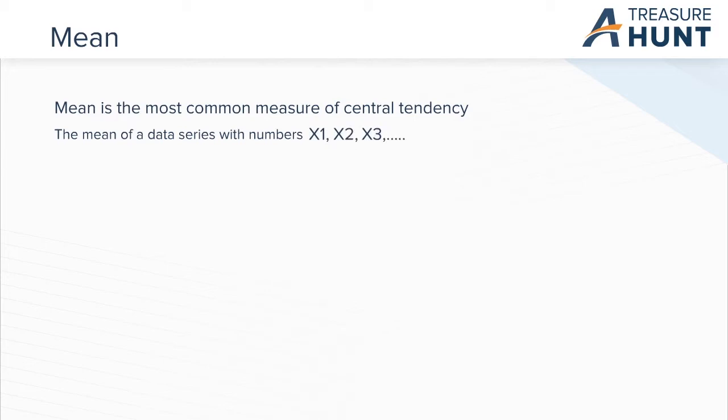Let's talk about mean first. It is the most common measure of central tendency. Given numbers x1, x2, x3, up to xn, the mean is found by computing the sum of the numbers and dividing that sum by n, the total number of data points in the data set.